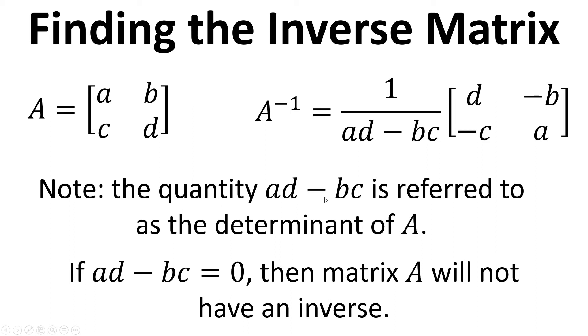Now this quantity, A, D minus B, C is referred to as the determinant of the matrix, and if it's zero, it means that the matrix will not have an inverse.